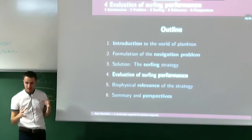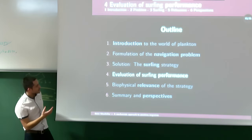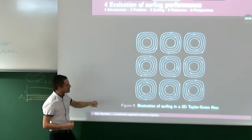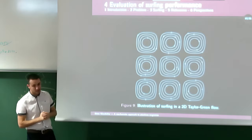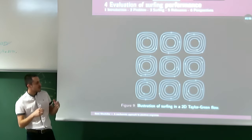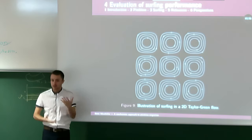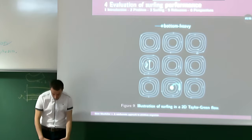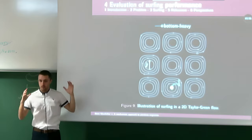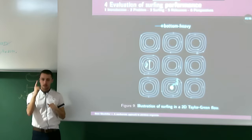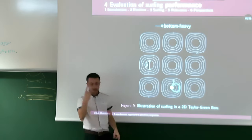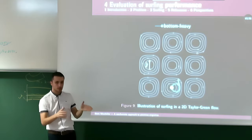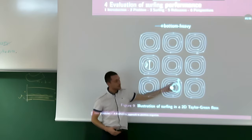The surfing strategy seems to work theoretically. Let's evaluate it in actual flows, starting with a simple 2D Taylor-Green flow. For comparison, we use a baseline strategy — always swimming upwards — called the bottom-heavy strategy, easily achieved by organisms with a heavier bottom part. A naive always-upward swimmer gets pushed into a downstream region and becomes trapped in a vortex. The surfer, by contrast, avoids this downstream region and exploits upward regions to migrate very effectively upwards.